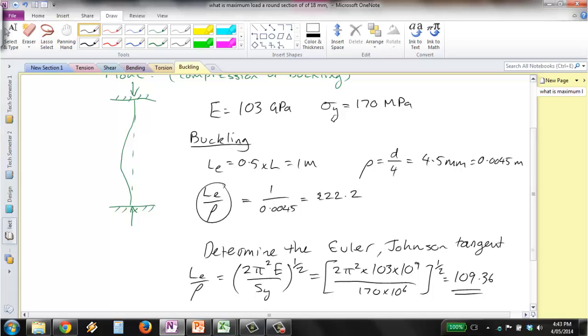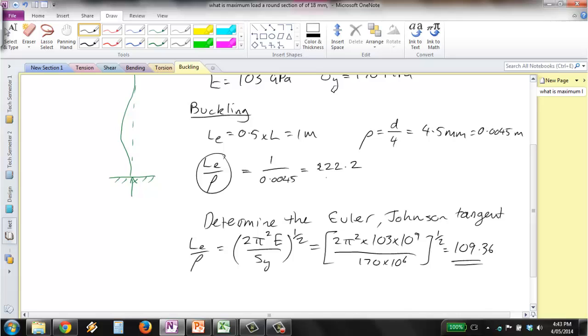Our slenderness ratio of 222.2 is significantly greater than the critical point. If it's greater than that value, then we use the Euler buckling equation.